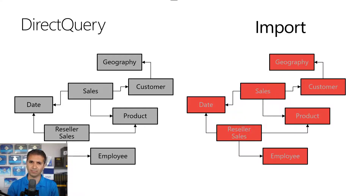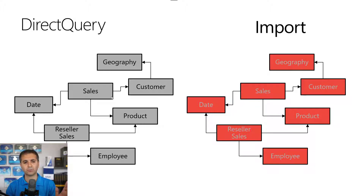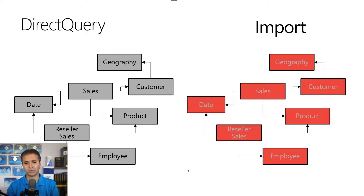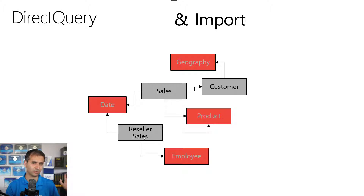The idea of composite mode is that not every table is big. You have small tables and big tables. If you just use Import, you import both small and large tables — like a sales table with hundreds of millions of rows alongside a date table with only 7,000 rows. With composite mode, you keep big tables in Direct Query and import the smaller dimension tables.